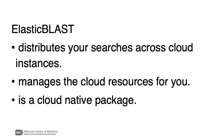Elastic BLAST starts cloud instances or machines, populates them with a database and software, and queues searches to them. The searches run there and not on your local machine. It manages the resources so the instances are shut down when your searches are done. Your results are saved in cloud buckets, which is just an area in the cloud you can store files in. For Elastic BLAST, we've used services like Kubernetes or AWS Batch that are maintained by the cloud provider.